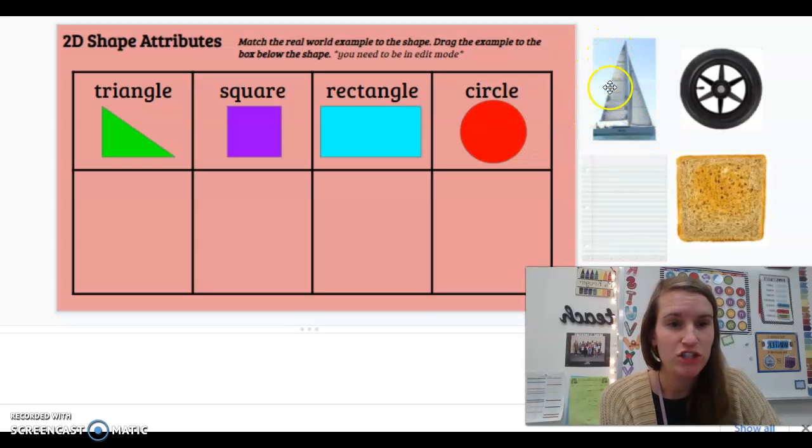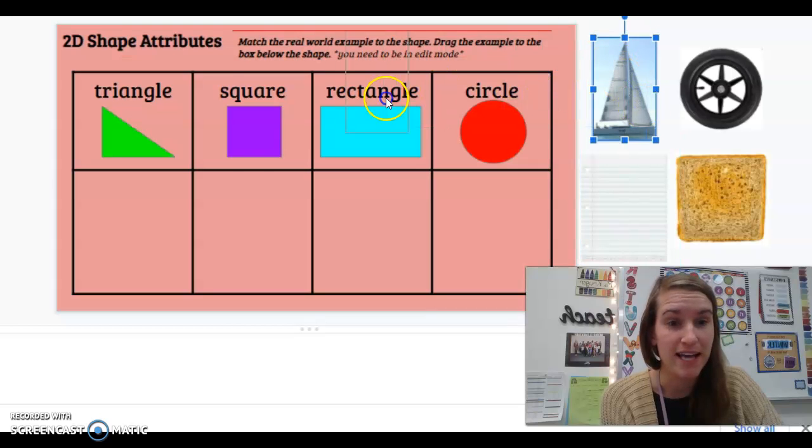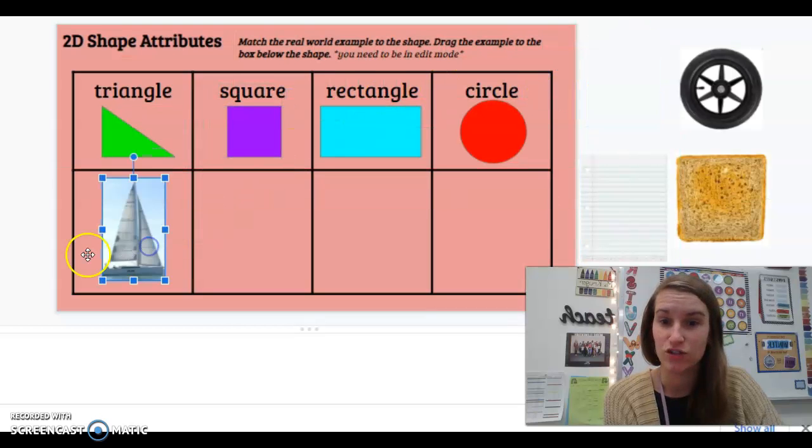This first picture of a sailboat, well the whole thing is a triangle, but also the sails are each triangles as well. They have three sides. So this is a triangle.